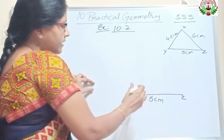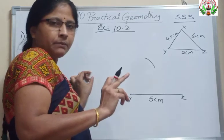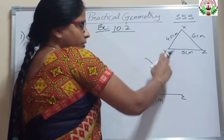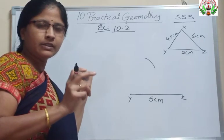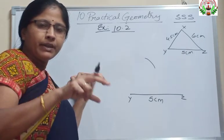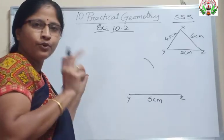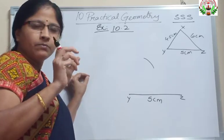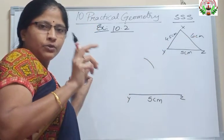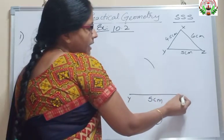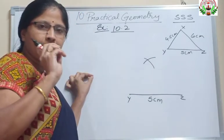Measure 4.5 cm. Keep the metal point at Y and draw an arc. Once again, repeating: we have drawn the base as YZ = 5 cm. We have to draw XY, so open your rounder, take your scale, open your rounder and measure 4.5 cm. Keep the metal point at Y and mark the arc for 4.5 cm.